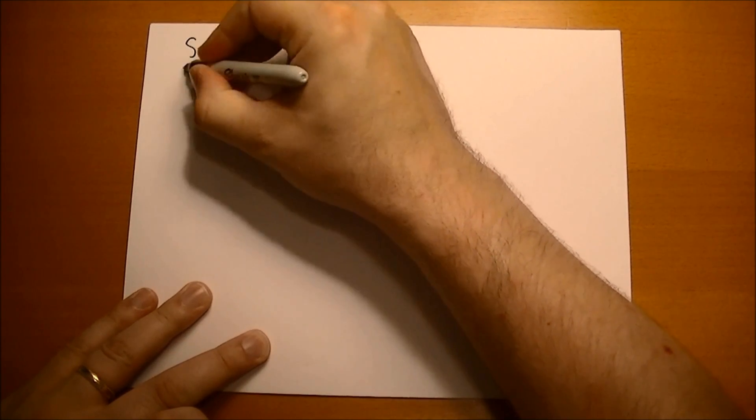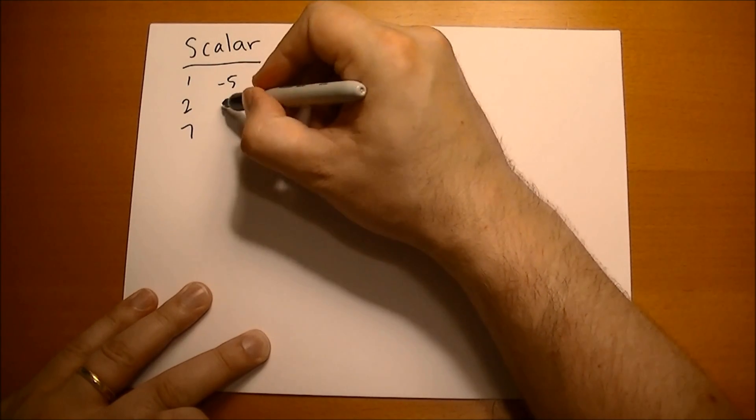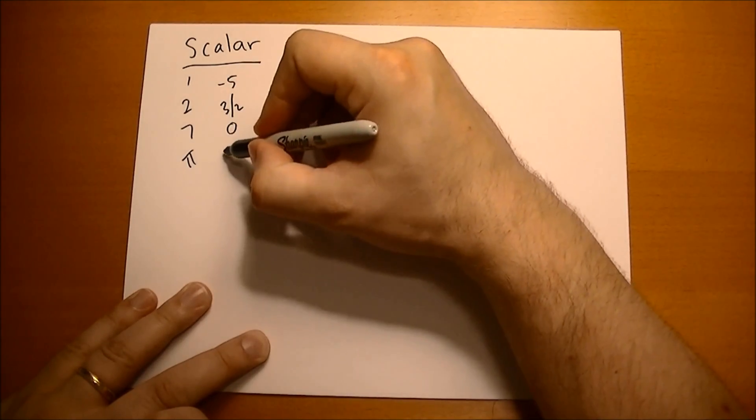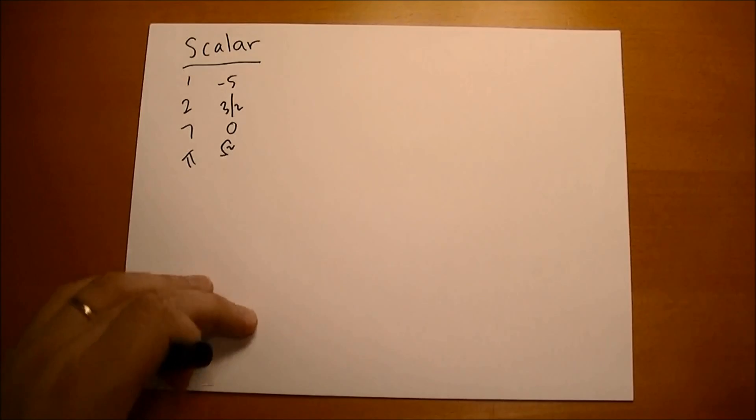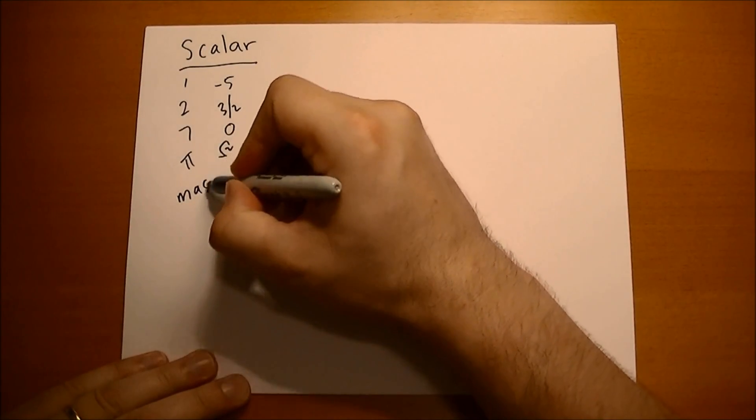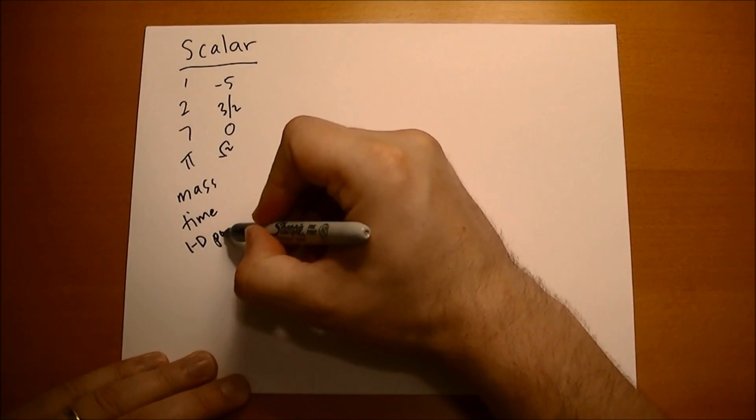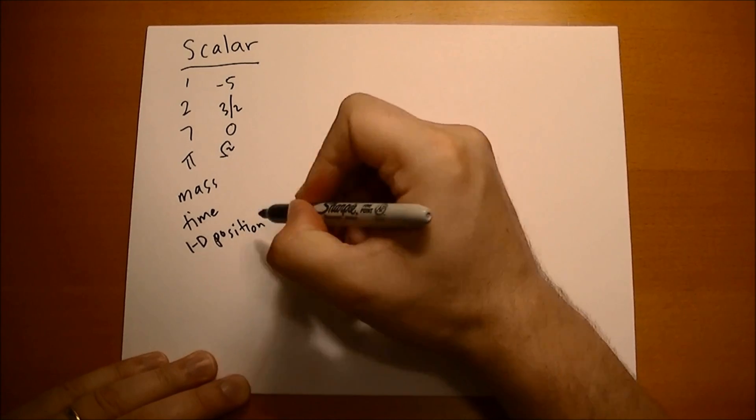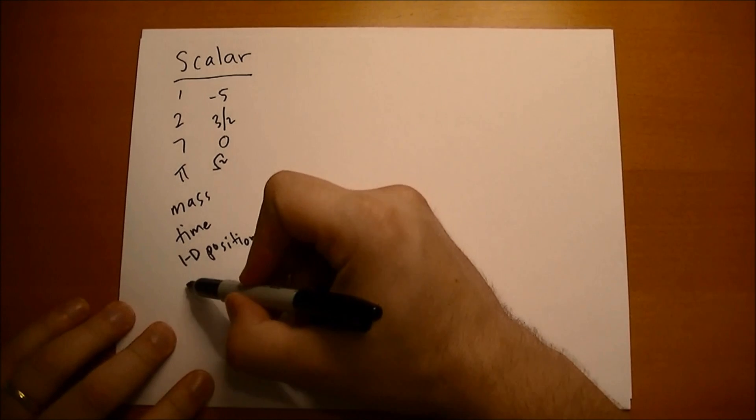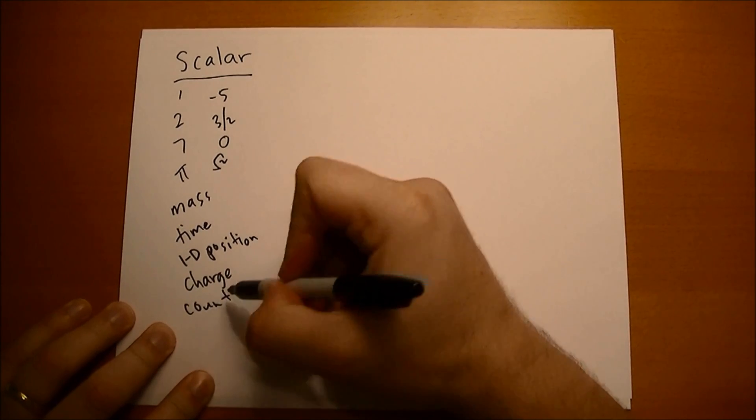We call those scalars. These are numbers like 1, 2, 7, -5, 3/2, 0 is another scalar, and of course the reals like pi and the square root of 2. With regular numbers you can describe things like mass, you can describe time, you can describe one-dimensional positions like where you are on a line or a curve as well, and you can describe charge and you can count things.